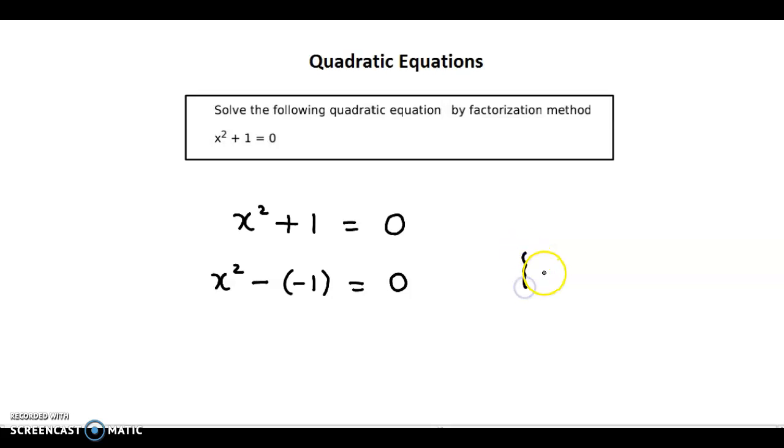And we know that iota square, the imaginary unit square is equal to minus 1. So, therefore, this could be written as x square minus iota square is equal to 0.